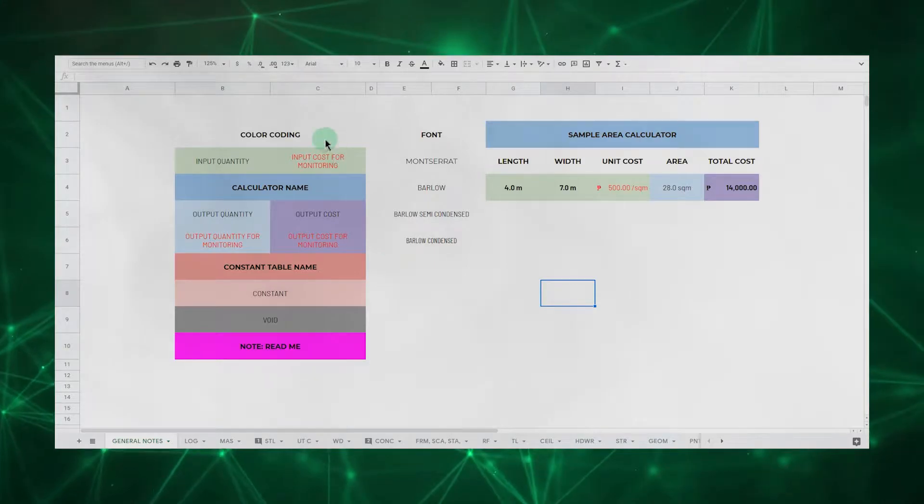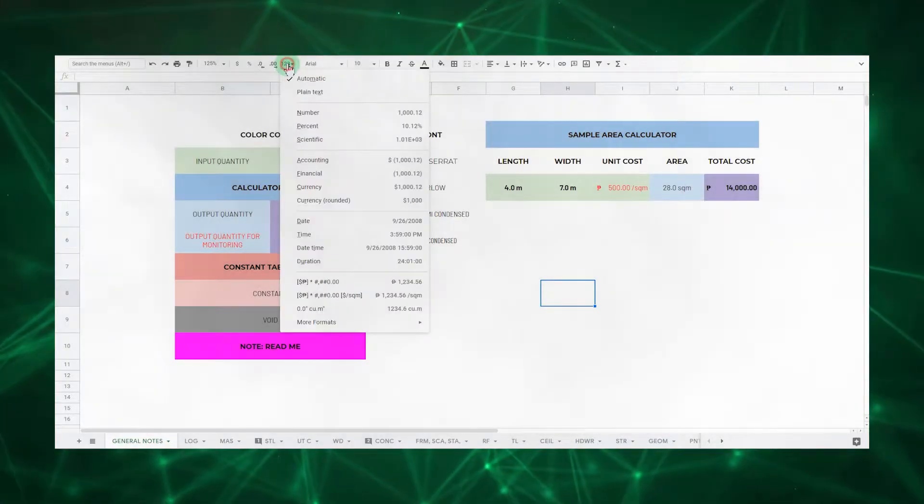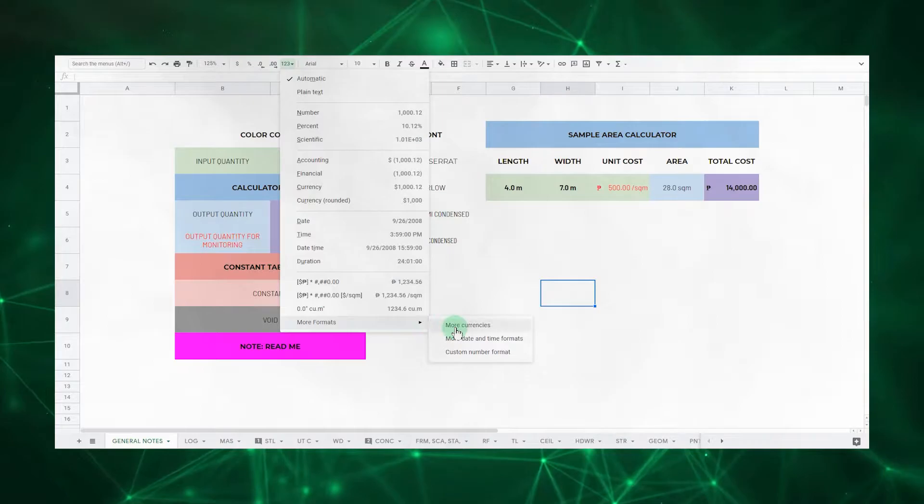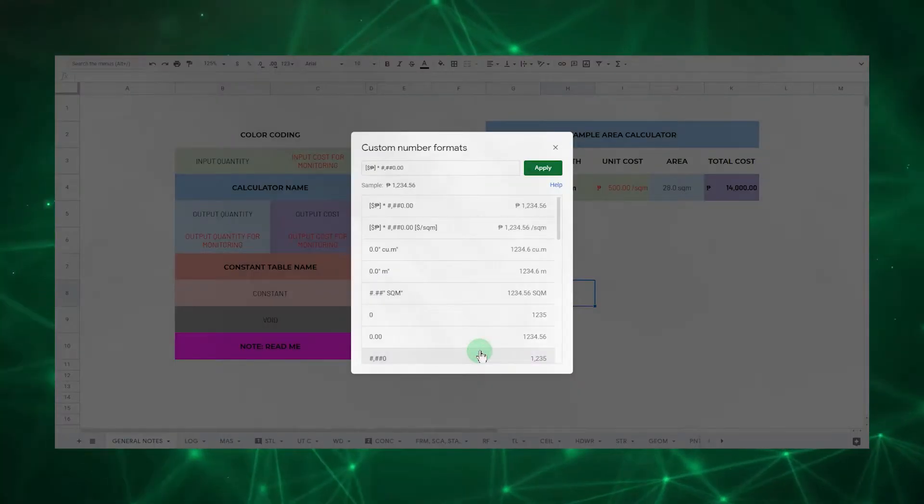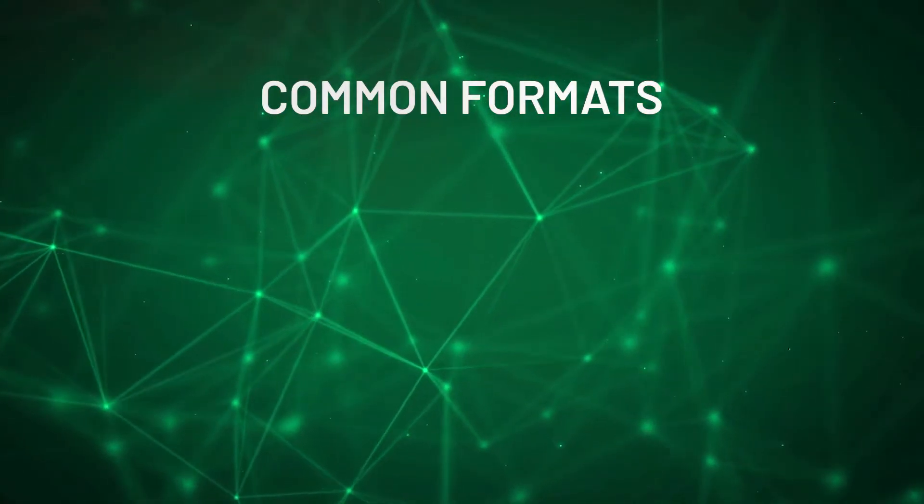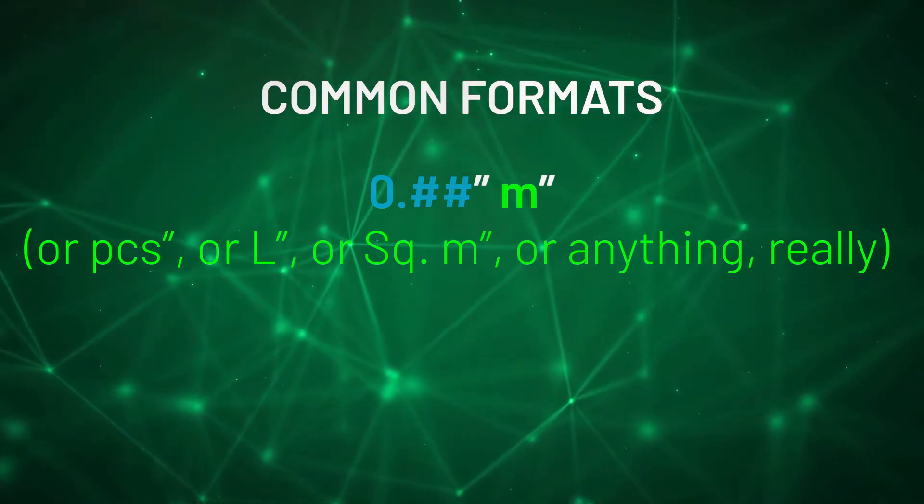To format a cell, just click more formats, another more formats, then custom number format. The two most common formatting I use are units of measurement and currency.